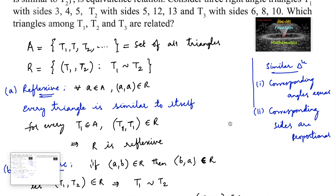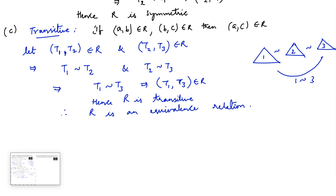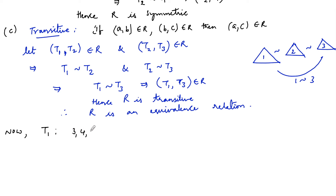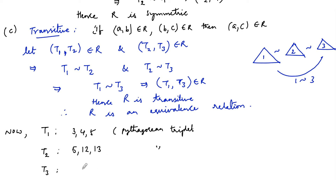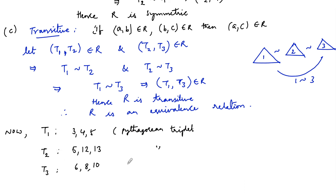Now we consider three right-angle triangles: t1 with sides 3, 4, 5; t2 with sides 5, 12, 13; and t3 with sides 6, 8, 10. Triangle t1 with sides 3, 4, 5 is a Pythagorean triplet, so it's a right-angle triangle. t2 with sides 5, 12, 13 is also a right-angle triangle, and t3 with sides 6, 8, 10 is also a right-angle triangle. All three are right-angle triangles.